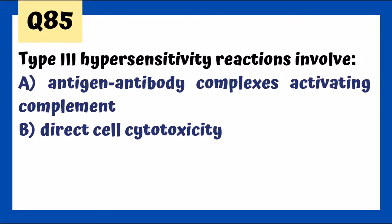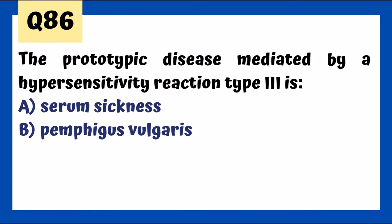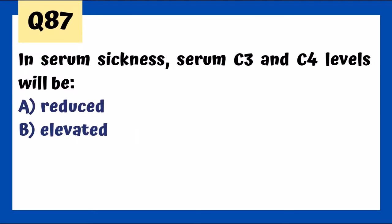Type 3 hypersensitivity reactions involve antigen-antibody complex activating complement. The prototypic example is serum sickness — first noted in individuals exposed to horse serum. Cardinal features include rash, fever, polyarthralgias, and polyarthritis, beginning one to two weeks after first exposure. The disease is self-limited and prognosis is great once the medication is stopped.